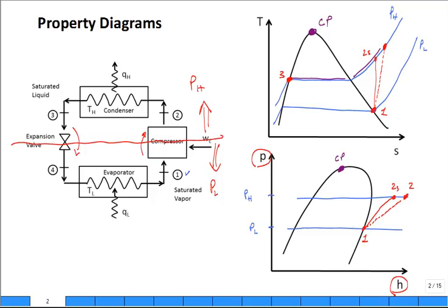So what's it look like on the pressure-enthalpy diagram? It's just cooling of superheated vapor until you get to saturated vapor, and then it's condensing, condensing, condensing until you get all the way to state three.